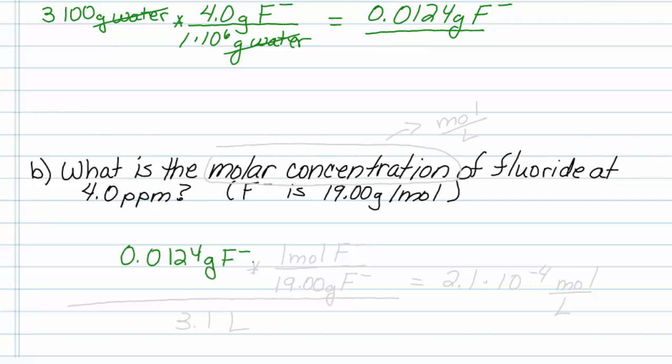So I'm going to write my grams of fluoride, and I notice that F is 19.00 grams per mole. It doesn't matter that we've lost an electron. Electrons are very light per 1 mole of fluoride.